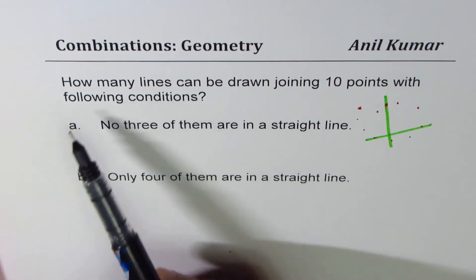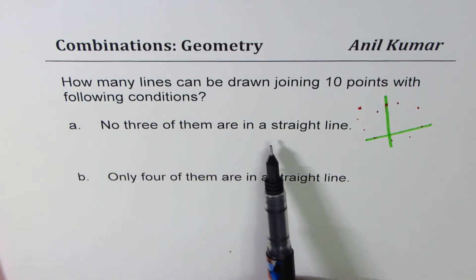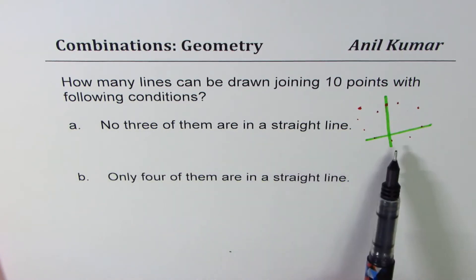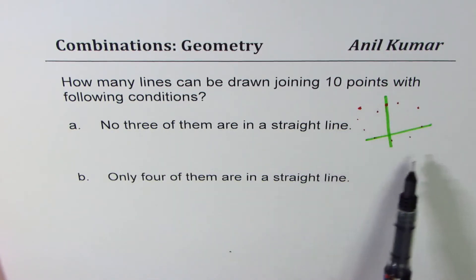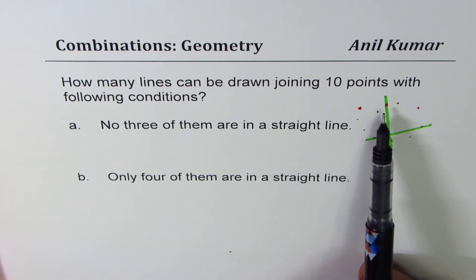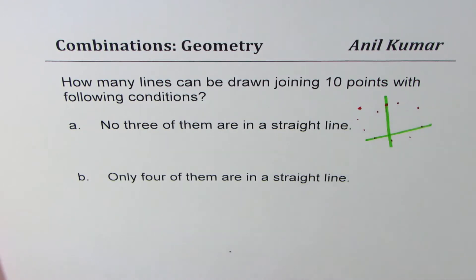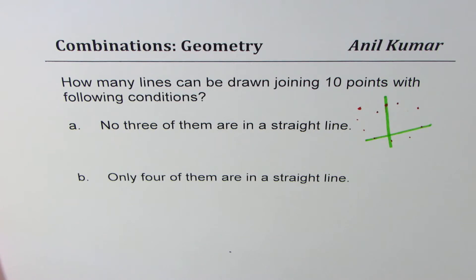For the first condition, no three of them are in a straight line — they are scattered, not collinear. So no three of them are collinear. How many lines can be drawn with this kind of condition?